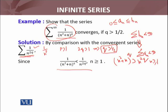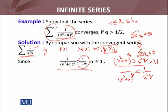For n larger than 1, this inequality is true. When we reverse it, the sign of the inequality changes: 1 over (n² + n)^q is less than 1 over n^(2q). So we are getting this inequality from this working, and it is true for n greater than or equal to 1. Here, 1/n^(2q) is your b_n and 1/(n²+n)^q is your a_n.